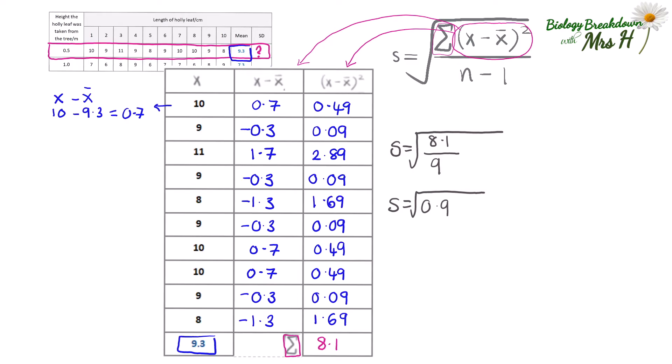Then we need to find the square root of 0.9 which is 0.9486832981. We can round that up to give us 0.949 or 0.95. So the standard deviation for the data collected at 0.5 metres high on the holly tree is 0.95.